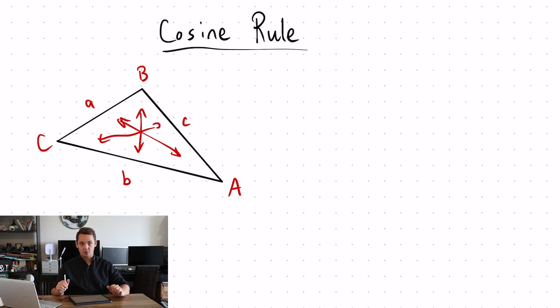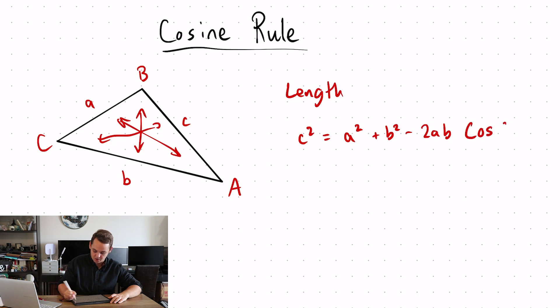So there's two versions of cosine rule, one that we like to use for length which looks like this. So length, C squared equals A squared plus B squared minus 2AB cos C.